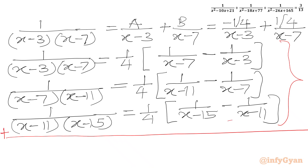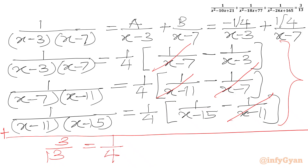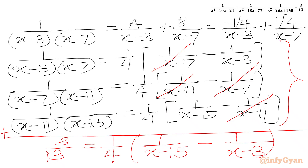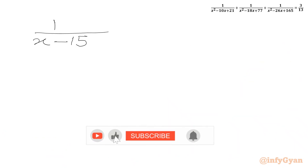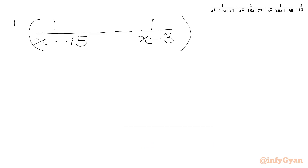When we add the three partial fraction expressions, several terms cancel out: 1 over (x minus 7) cancels with minus 1 over (x minus 7), and similarly for (x minus 11) terms. The left-hand side equals 3 over 13, and the right-hand side simplifies to 1 over 4 times [1 over (x minus 15) minus 1 over (x minus 3)].